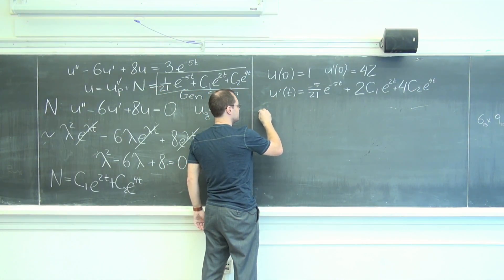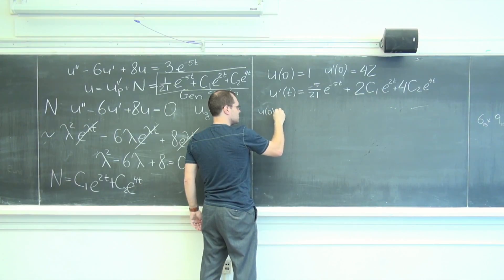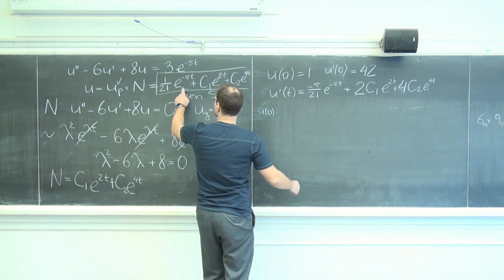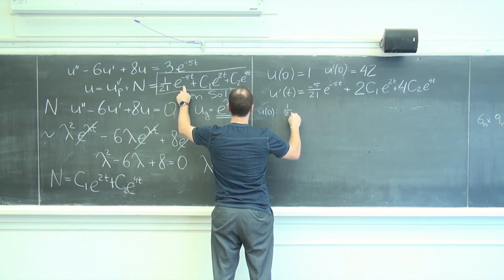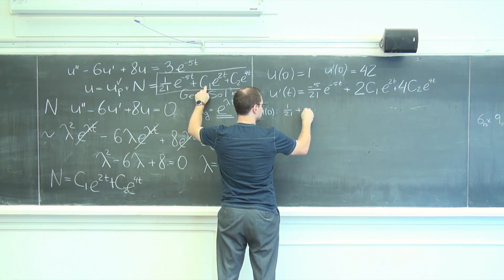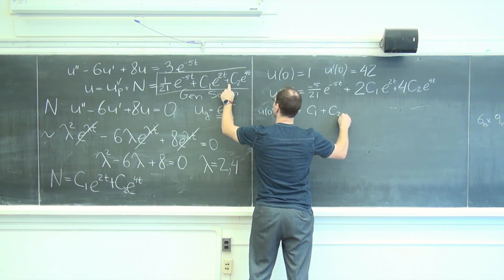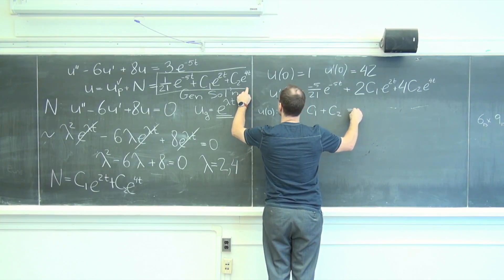So now, u of zero, I won't write equals, I'll just write colon. Here's what we'll get from u of zero. We will get 1 over 21 plus c1 plus c2 equals 1.